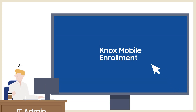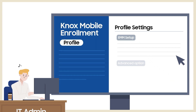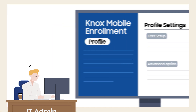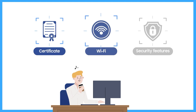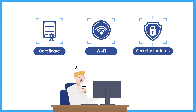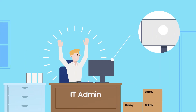To enroll those devices into EMM, profiles must be set up first. He only needs to select an EMM solution on the Knox Mobile Enrollment Console and select the appropriate option details. Those options include certificate installation, setting of Wi-Fi SSID and password enabling automatic network connection, and enablement of advanced security features. Now, the profile settings are already completed.